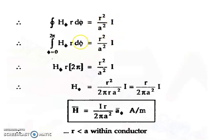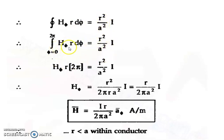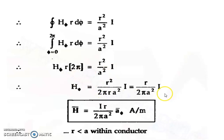The integration limits are φ from 0 to 2π. So the integral from 0 to 2π of H_phi r dφ equals r² / a² × I. Since H_phi r is constant, taking it out gives H_phi r × 2π = (r² / a²) × I. Therefore H_phi = r² / a² × I / 2π.